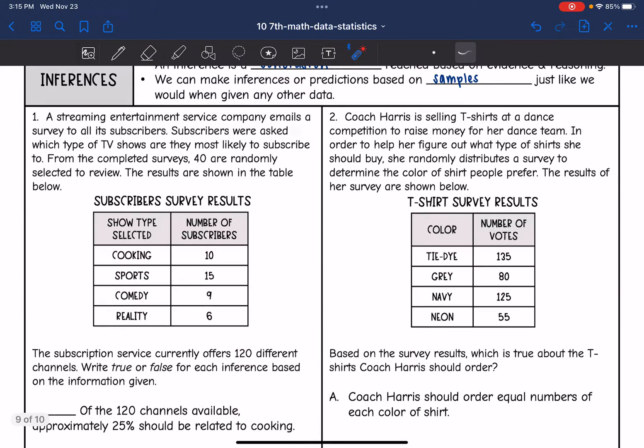So let's look at this first one. A streaming entertainment service company emails a survey to all its subscribers. Subscribers were asked which type of TV show are they most likely to subscribe to. From the completed surveys, 40 are randomly selected to review. The results are shown in the table. So there was a total of 40 that they looked at to get this data instead of looking at every single person that filled out the survey.